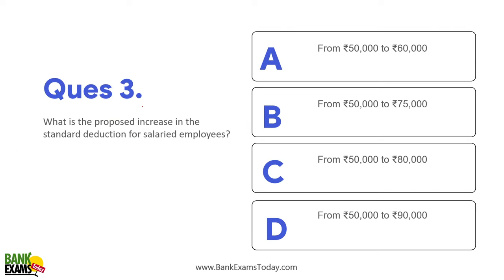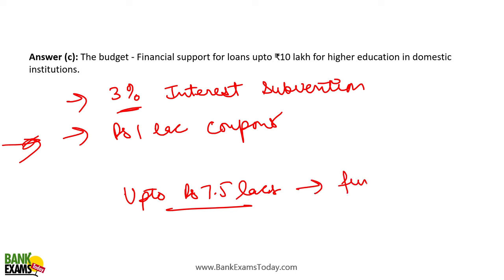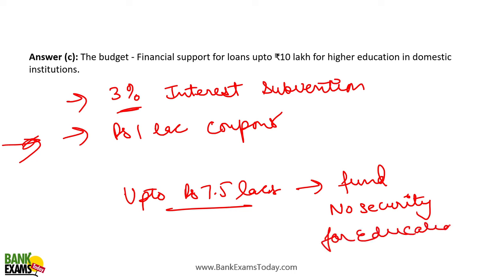Another important point: for loans up to ₹7.5 lakhs, collateral-free loans would be provided. The government would set up a fund through which collateral-free — no security needed — educational loans up to ₹7.5 lakhs can be availed. No need to provide any security or collateral.